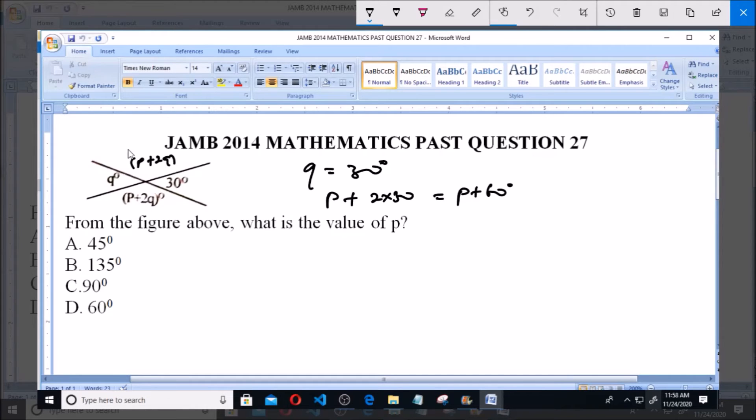So we can equal them to 360° by saying 30 plus 30, that's q plus 30, which is 30 plus 30, then plus p plus 2q, which is p plus 60°. So we have two of them, that's 2 times p plus 60.